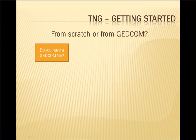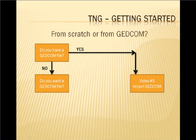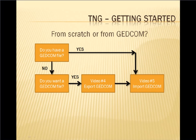Starting from scratch or from a GEDCOM file? Do you already have a GEDCOM file? If yes, go to video number five — Importing GEDCOM into TNG. If no, decide whether you want to use a GEDCOM file from your existing family tree software. A GEDCOM file is the safest and fastest way to populate TNG with people and families. Go to video four to learn how to export your data into a GEDCOM file, then proceed to video five.